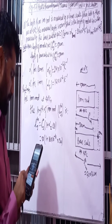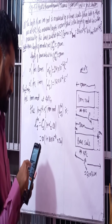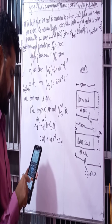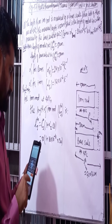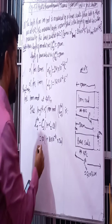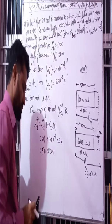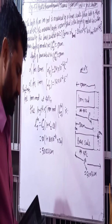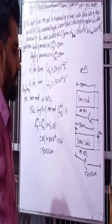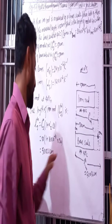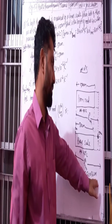50 times 1 plus alpha delta, into 10 to the power minus 6, times 30, equals 50.024 centimeter. So 50.024 centimeter is the length of the rod. The brass scale shows 50.036 centimeter and the rod length is 50.036 centimeter.